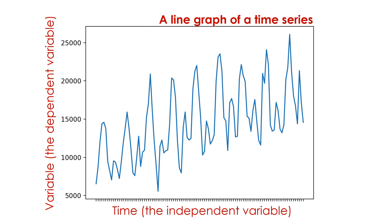Time series can be illustrated as graphs in which one axis of the plot represents the variable, and the other axis is time. Usually, the independent variable — time — is shown on the horizontal axis. The dependent variable, the variable that depends on the value of the independent variable time, is illustrated on the vertical axis of the plot.